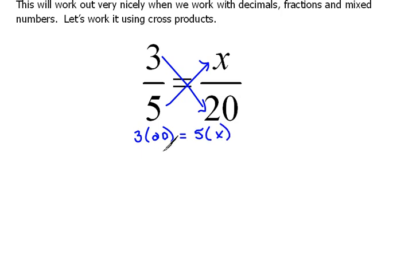Well, let's see. What do we know here? We can do 3 times 20. 3 times 20 would be 60. So 60 will equal 5 times some number.